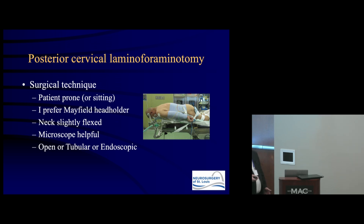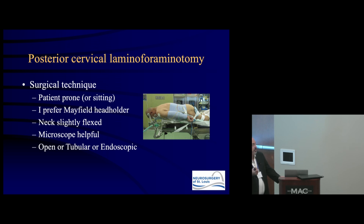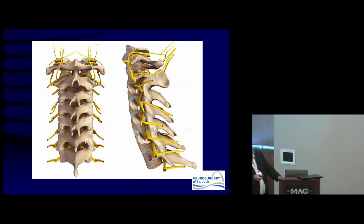For surgical technique, there are many variations. This can be done in the sitting position, though at our institution anesthesiologists largely block that, so I do them prone with a Mayfield head holder and the neck slightly flexed for better access. The microscope is very helpful — whether doing it open with a small incision and retractor, or tubular/endoscopic. You need visualization for both light and magnification. A colleague prefers a scope for all posterior foraminotomies given the inflamed tissue and limited visibility.